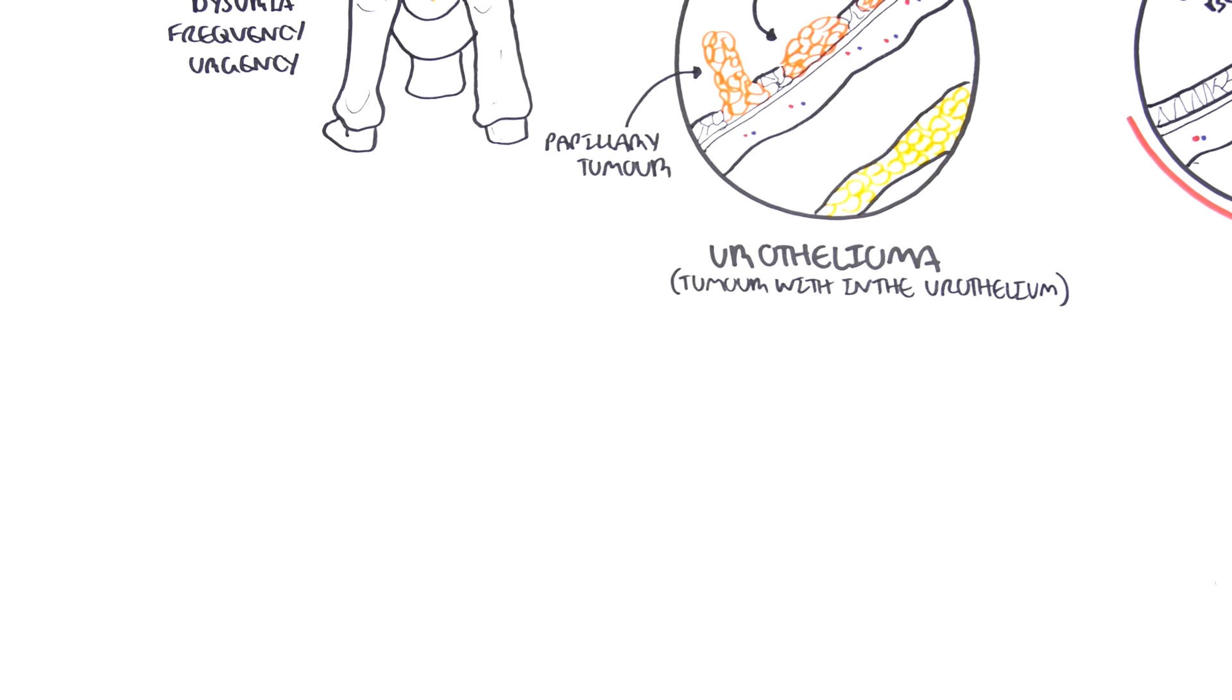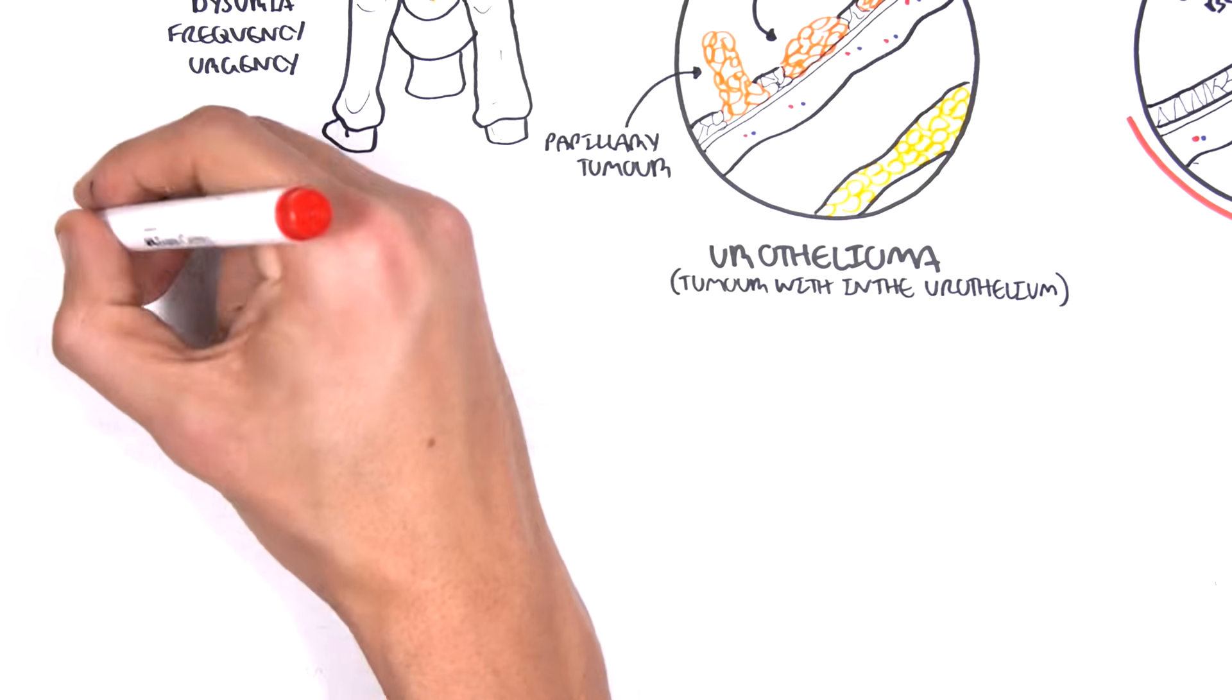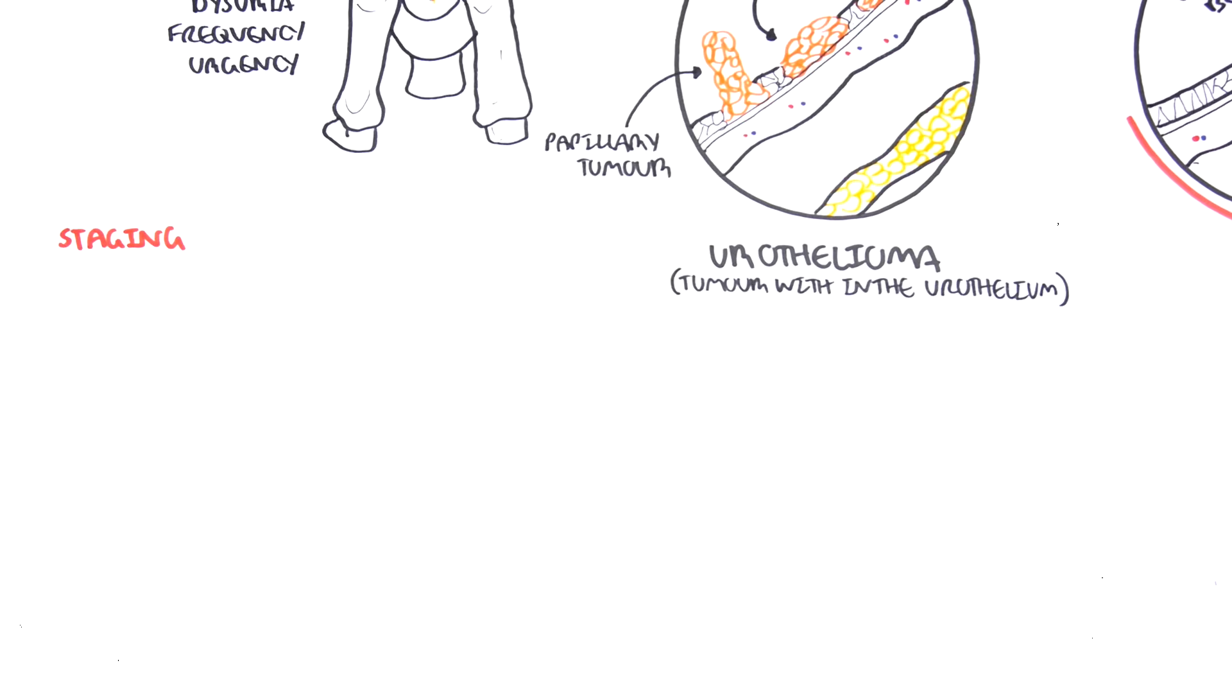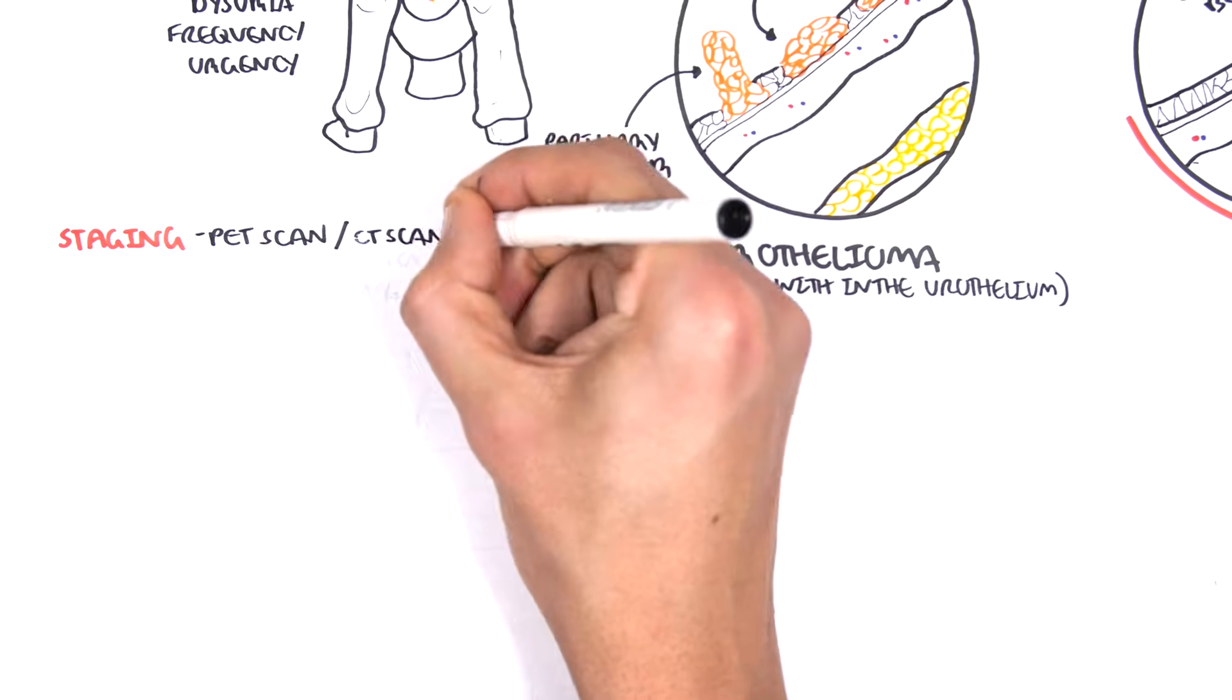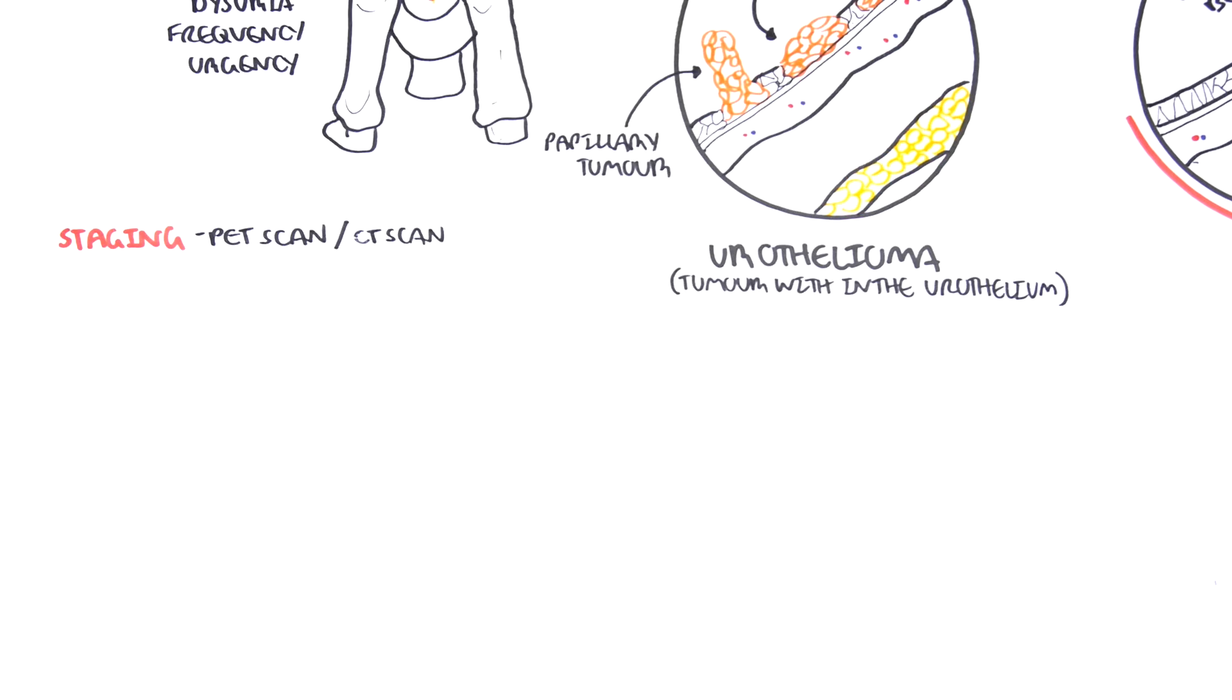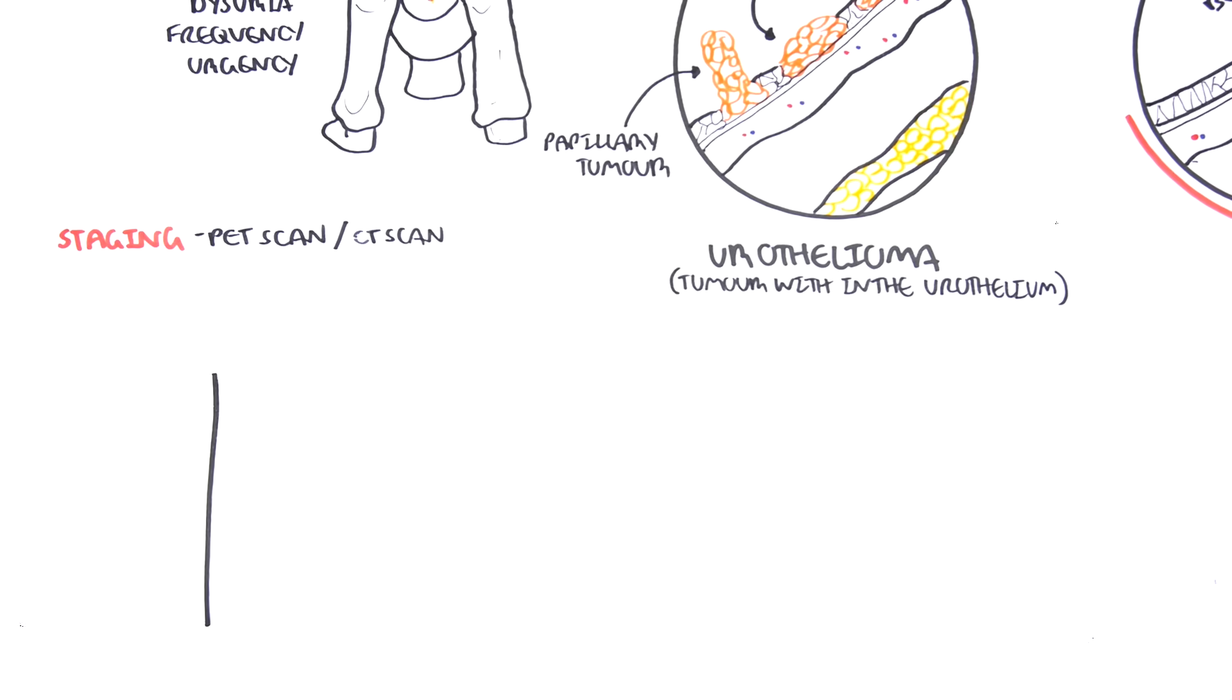After obtaining the biopsy of the tumor within the bladder, the tissue is examined for malignancy, whether it's present or not. If malignancy is confirmed, the next step is to stage the tumor, because this will then tailor the management. The use of PET scan or CT scan can help stage the bladder tumor accurately, and to see what layers of the bladder are involved, and to see if the tumor has spread elsewhere around the body.